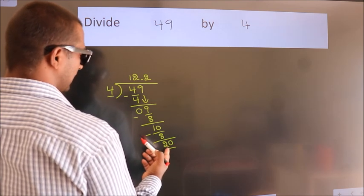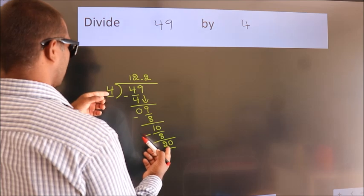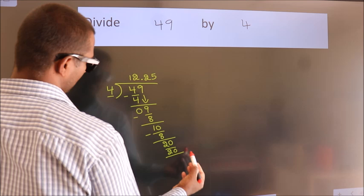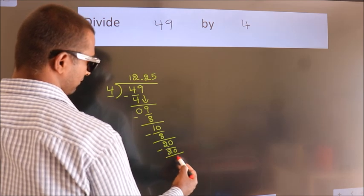When do we get 20? In 4 table, 4 times 5 is 20. Now we subtract, we get 0.